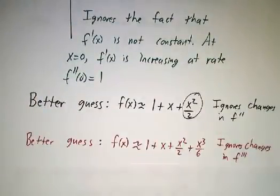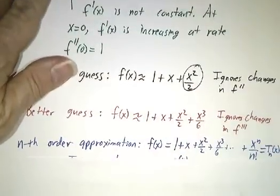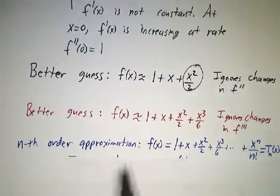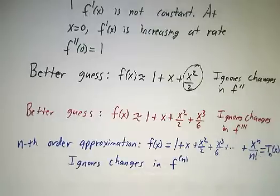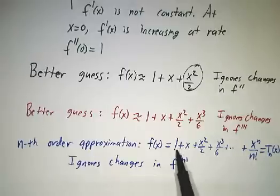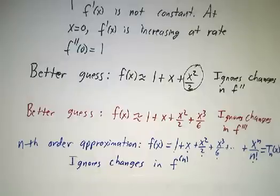And if you throw in a cubic term, you get something whose third derivative is constant. And if you throw in an nth order approximation, our nth order approximation, we take the first n terms of a Taylor series. And this is something whose nth derivative is a constant. So it ignores changes in the nth derivative, but it uses everything we know about the value of the function at 0, the derivative at 0, the second derivative at 0, the third derivative at 0, the nth derivative at 0. And at some point, you have to say, enough is enough. That's a good enough approximation.